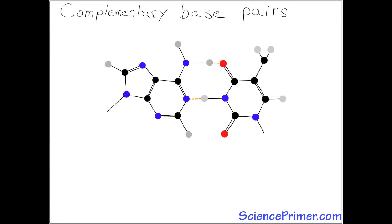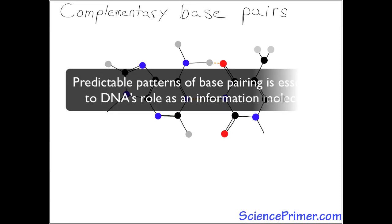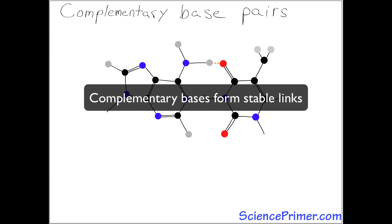DNA is the information molecule of the cell. DNA's capacity to store and transmit heritable information depends upon interactions between nucleotide bases and on the fact that some combinations of bases form stable links, while other combinations do not. Base pairs that form stable connections are called complementary bases.